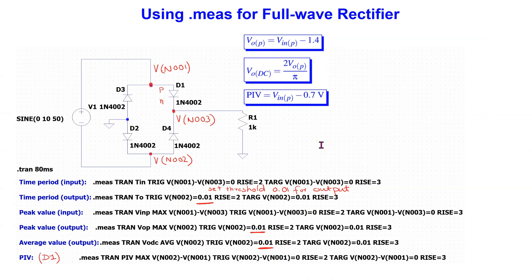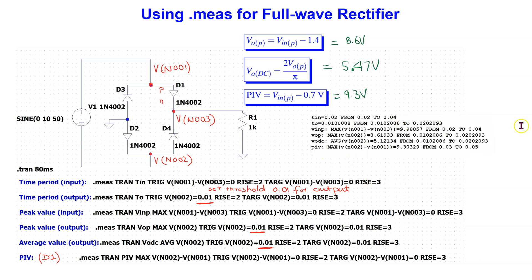Next we consider a full wave or bridge rectifier. The circuit theory for the bridge rectifier tells us that in this case the voltages of interest can be determined as shown. In this circuit, the input signal is connected between nodes N001 and N002, and the output voltage is at node N003. Using a similar approach as before, we can define the measure directives as shown. When we simulate, we can obtain the results shown here, which agree with the predicted values very well.